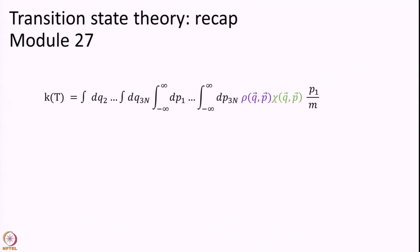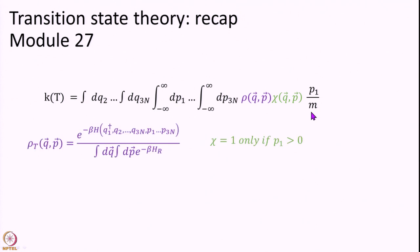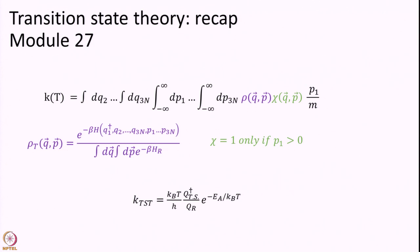We will do a quick recap of what we covered in Module 27. We wrote an expression to calculate the rate constant at a given temperature: we integrated over the dividing surface over momenta. This includes the density, the transmission factor, and the flux. Transition state theory assumes rho to be the thermal Boltzmann density, and for chi we put chi equal to 1 if p₁ is greater than 0, and chi equal to 0 otherwise. Under these assumptions we derive transition state theory, and this is the expression we get.